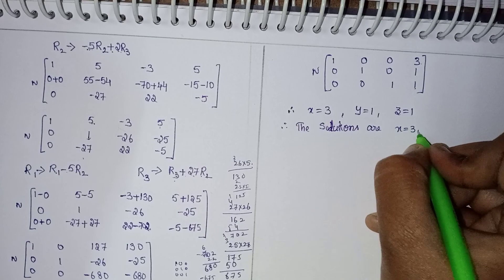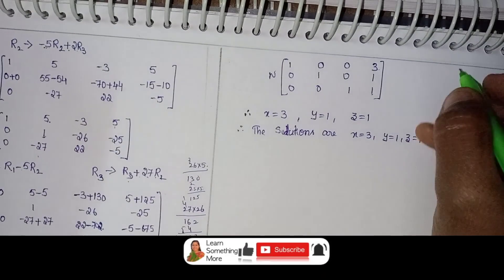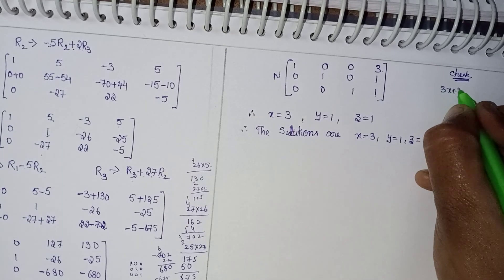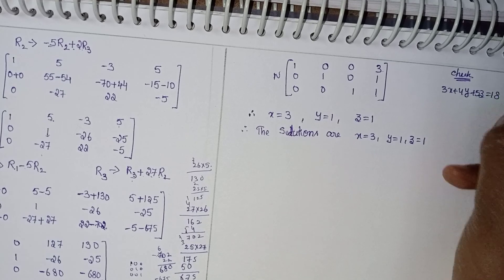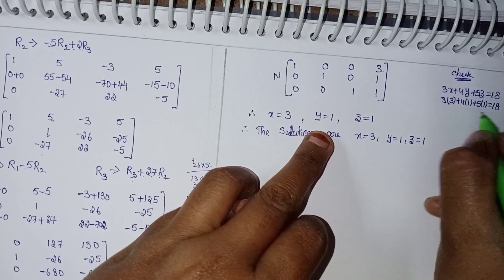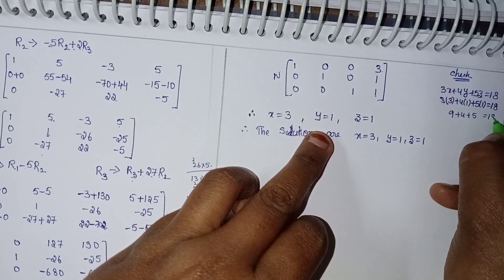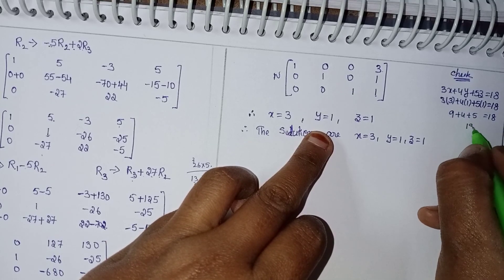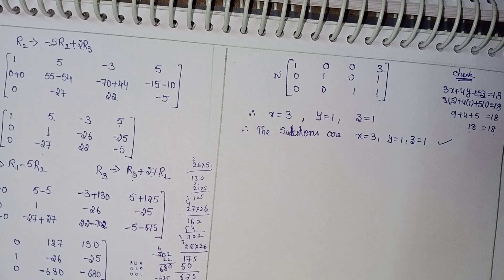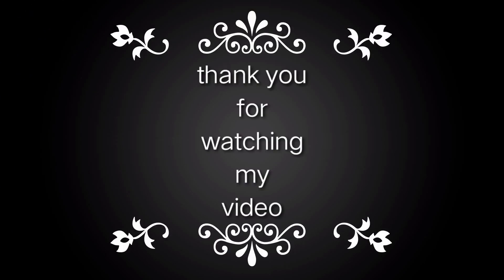Check once: take the first equation, 3x + 4y + 5z = 18. Substituting x = 3, y = 1, z = 1: 3×3 + 4×1 + 5×1 = 9 + 4 + 5 = 18. LHS equals RHS, so the answer is correct. This is the Gauss-Jordan method introduction and one complete solved example. Thank you for watching. Take care.